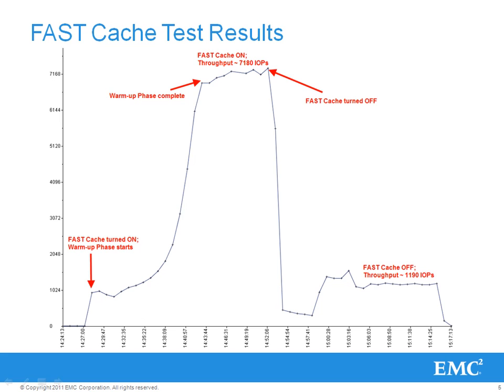Our test workload had 80% read IOs. You can see that fast cache was turned on at the extreme left-hand side of the chart. Once fast cache is turned on, it starts warming up where it promotes heavily accessed storage chunks into fast cache. This can be seen in the upward curve of the throughput chart. It took about 15 minutes for the LUN to reach stable values of approximately 7200 IOPS. When fast cache was turned off, this throughput value dropped down to approximately 1200 IOPS, as seen on the right side of the chart. In this test setup, we can see a 6 times improvement in throughput when fast cache is used. The important thing to note here is the warm-up time that fast cache takes before it starts showing stable values.